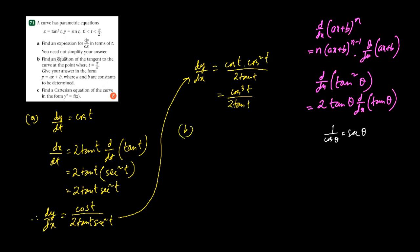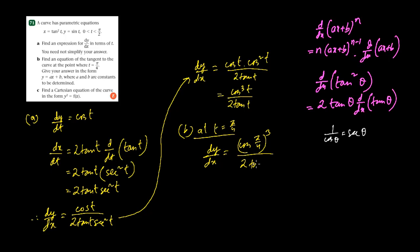In question part (b), find an equation of the tangent to the curve at the point t = π/4, and express your answer in the form y = ax + b. So let's find the gradient first. At t = π/4, dy by dx equals cos³(π/4) divided by 2 tan(π/4). So cos(π/4) is 1 by √2, and tan(π/4) = tan 45° = 1.